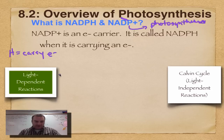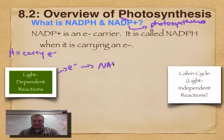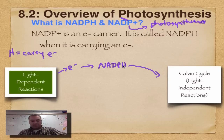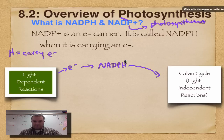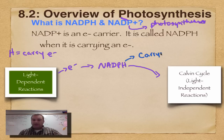The light-dependent reactions are going to give off an electron. That electron is going to go to NADP+, and when NADP+ picks up an electron, it becomes NADPH, and that's going to be delivered to the Calvin cycle. Write here next to this: when it's NADPH, it's carrying electrons.